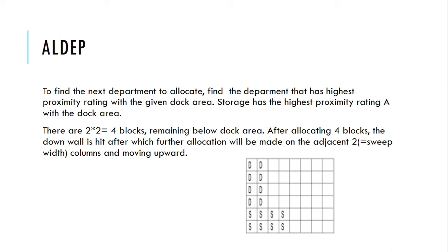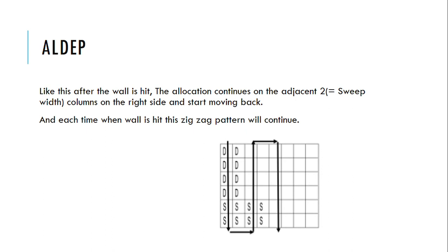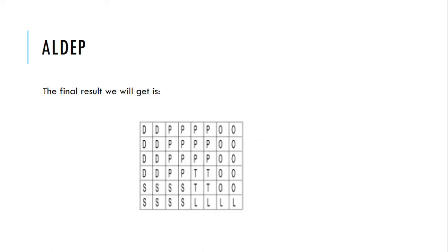Moving upward along two columns, after the wall is hit, allocation continues to the adjacent two columns on the right side and starts moving back. Each time a wall is hit, the zigzag pattern continues. According to this pattern, we fill all the columns and rows, and after filling all of them we get the resulting layout of the facility.